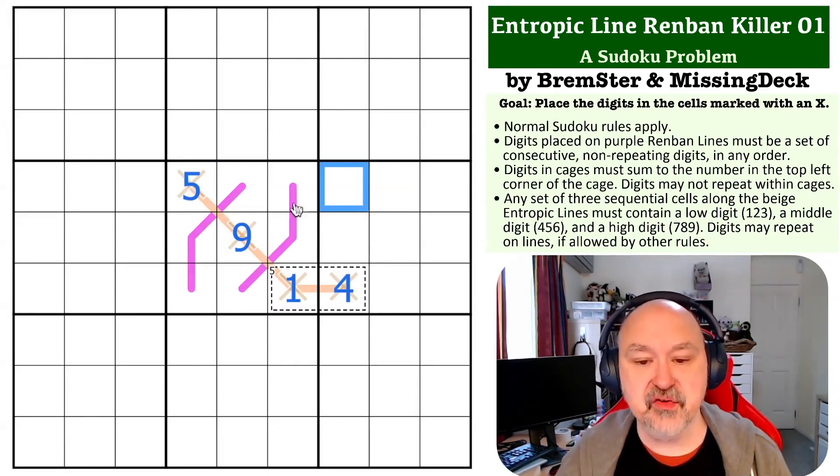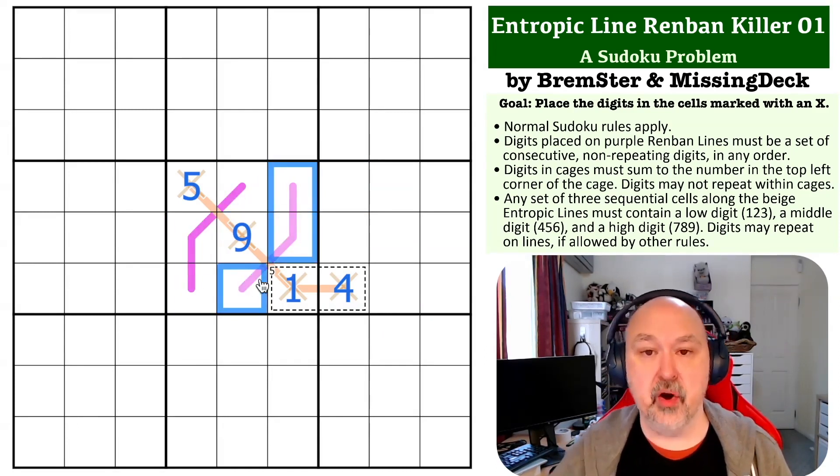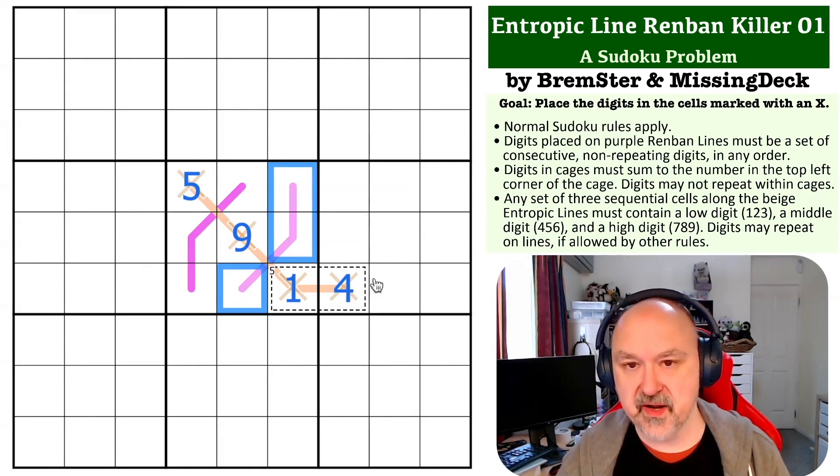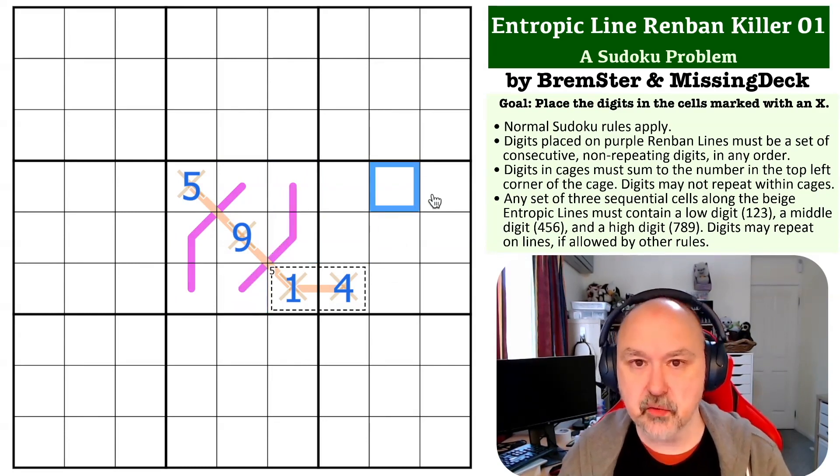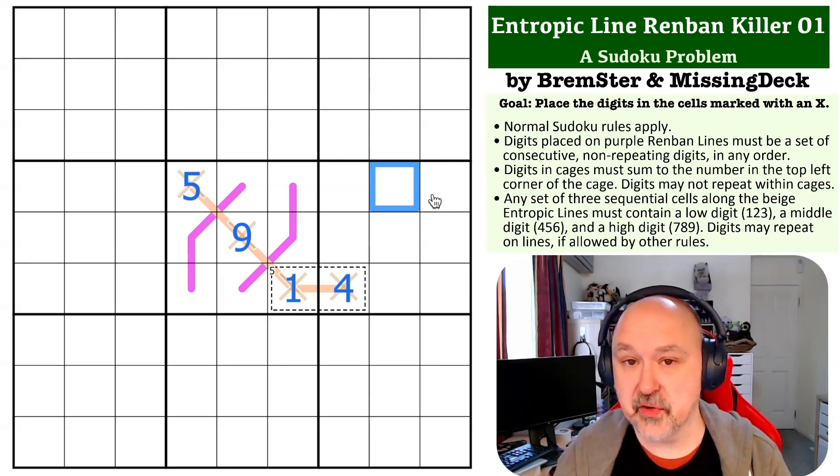I really like the trick of these Renban lines. If they take all 3 of the high or lows, it breaks the entropic. It's a very nice little trick that we found while creating a different puzzle. And it is definitely one that we want to explore more. But it was definitely worth showcasing in a problem.